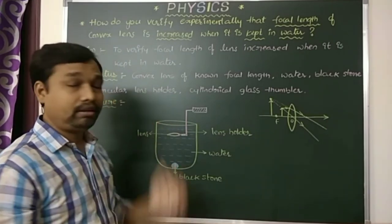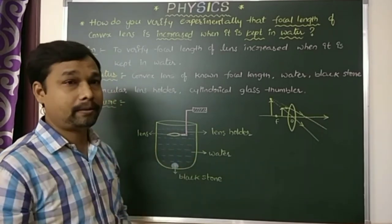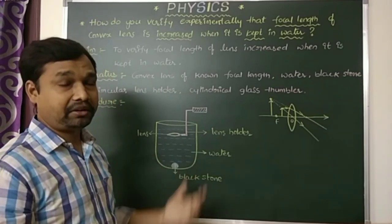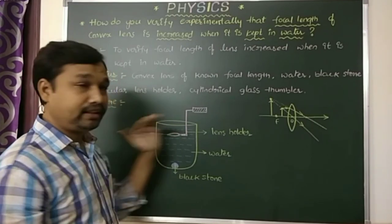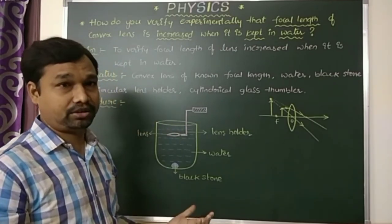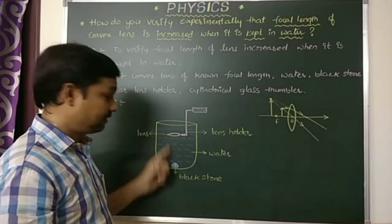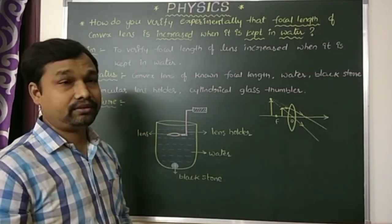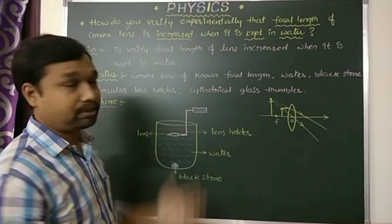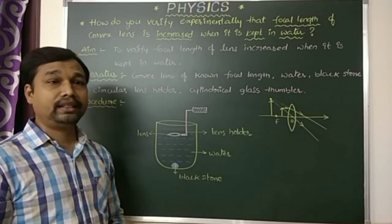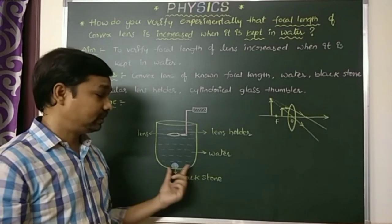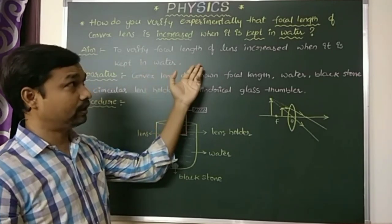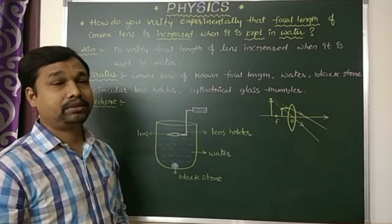Why? Because the focal length will be increased when the lens is placed in water. In this experiment, what we are identifying is: as the focal length increases, we can find the image. Focal length of the lens increased, and we found the image of the stone. This is the verification. The conclusion is: as the focal length increases, you can find the image of the stone, so you can conclude that the focal length of the lens increases when it is kept in water.